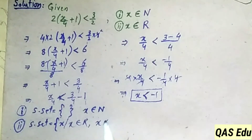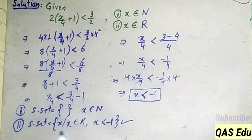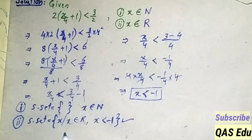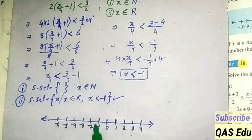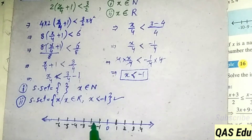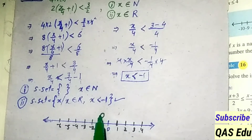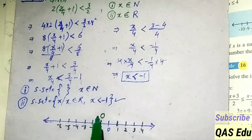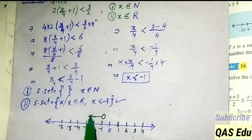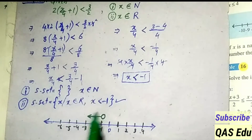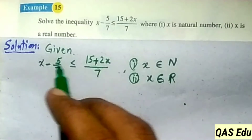On the number line, since x is less than minus 1 and minus 1 is not included, we draw an empty circle at minus 1 and an arrow going left, representing the solution set on the number line.